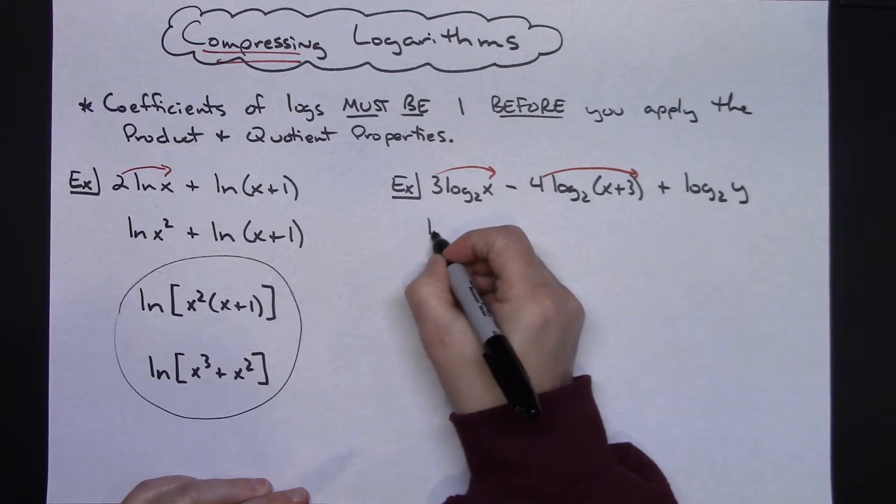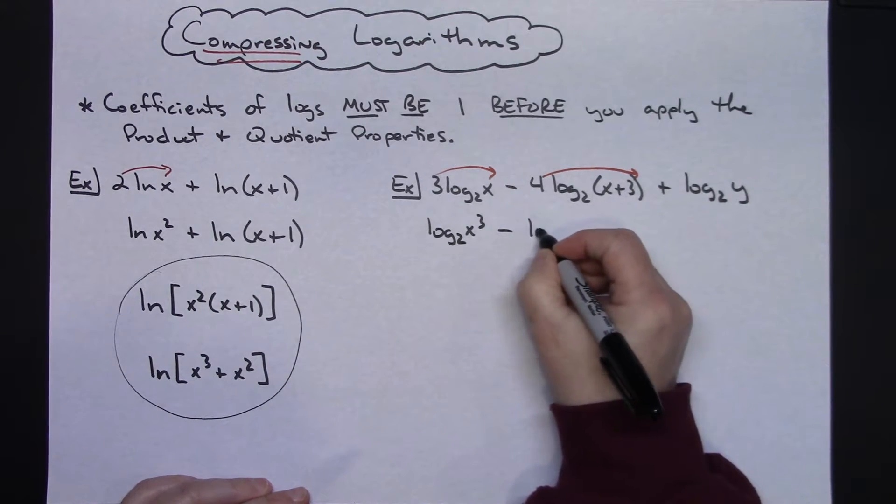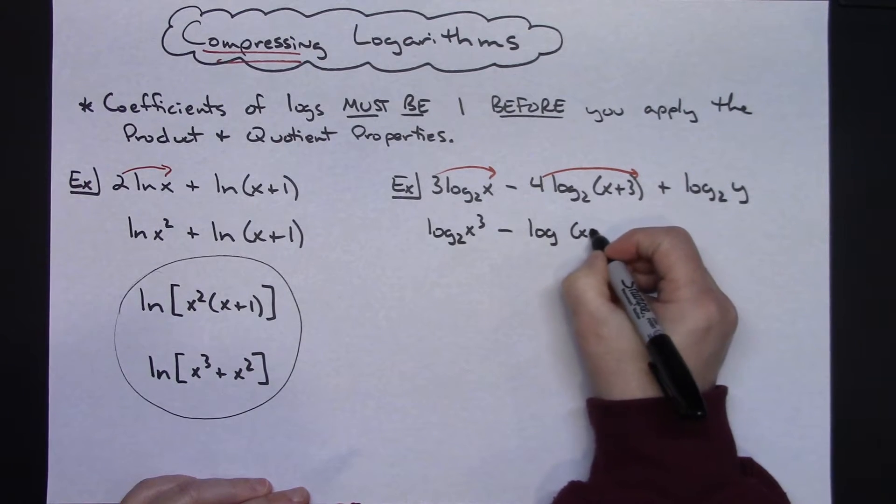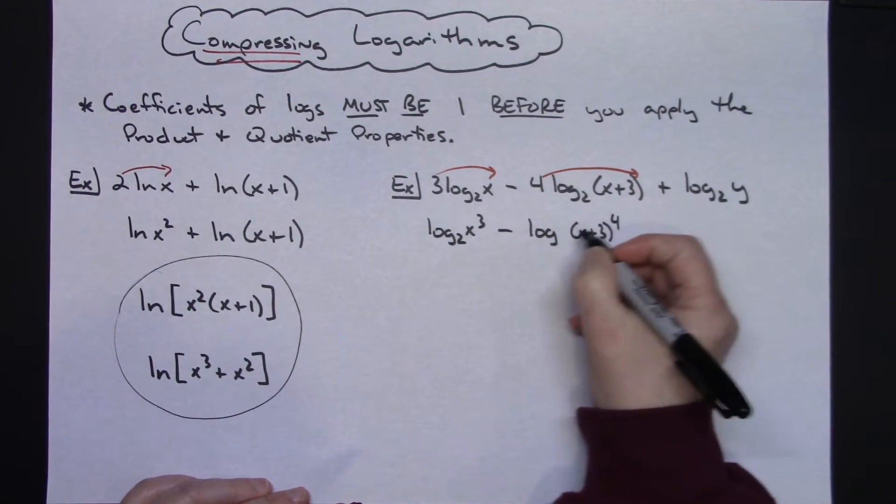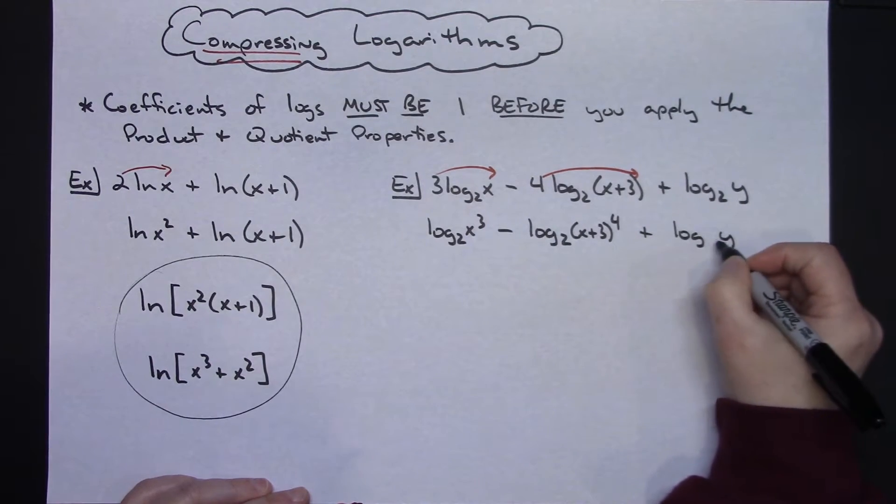So this would be the log of x to the third base 2 minus the log of (x+3) to the fourth base 2 plus the log of y base 2.